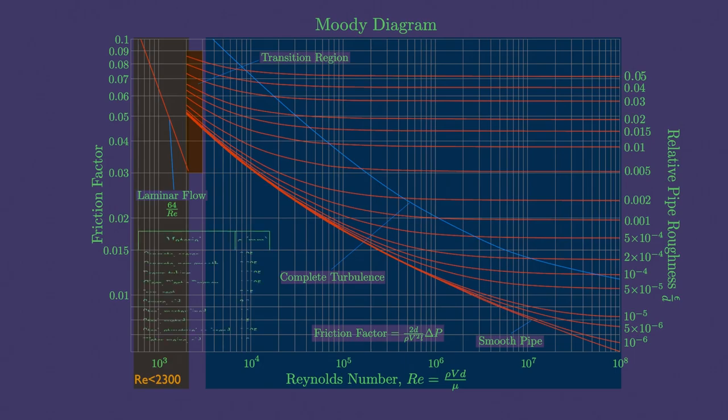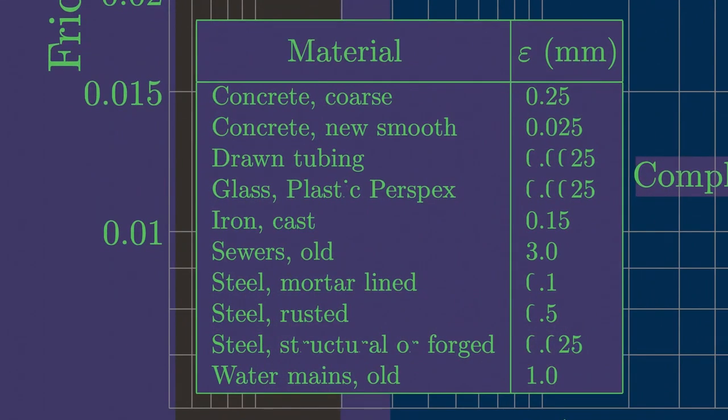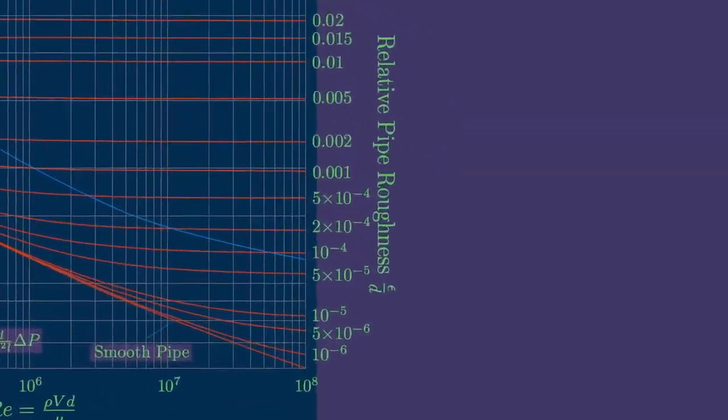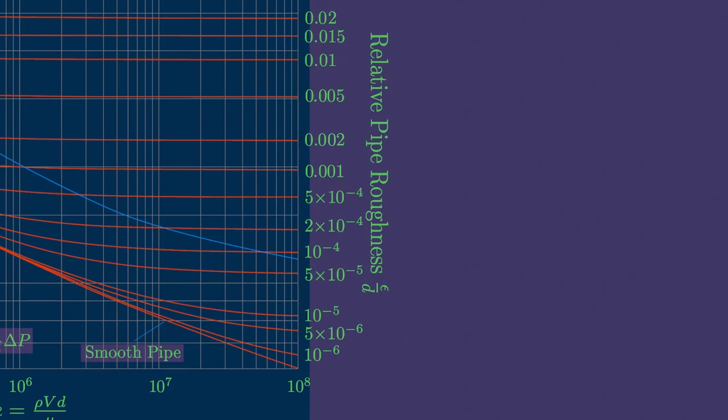The mean roughness values for some commercial pipes can be found on table, and by dividing it with the pipe diameter, we get the relative roughness.